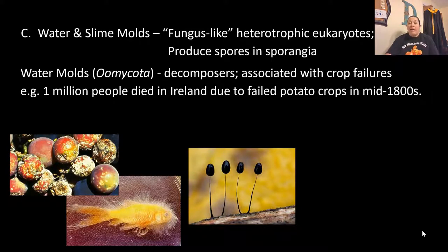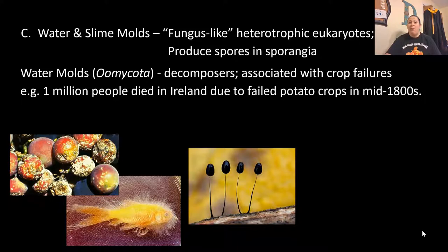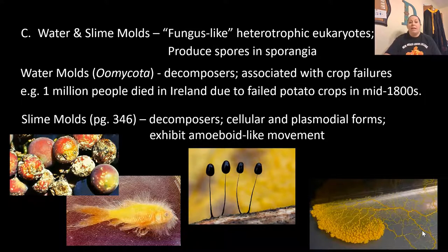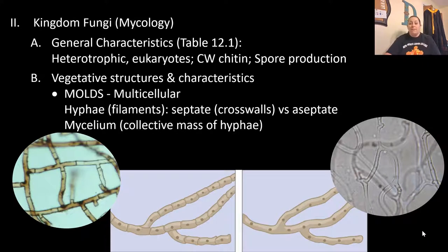Water molds like Oomycota are decomposers and are sometimes associated with crop failures. One example that got out of control is when one million people died in Ireland due to the potato famine in the mid-1800s — that famine was caused by a type of water mold that killed the potato crops. Slime molds are also decomposers and can exist in a cellular form or a plasmodial form, exhibiting amoeboid-like movement in the plasmodial form.